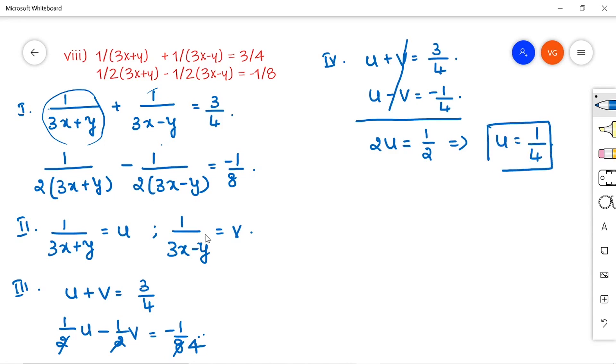Once you get the value of u, substitute it back in any of the equations and get the value of v also. So, u plus v is equal to 3 by 4. Substitute u. v is equal to 3 by 4 minus 1 by 4. That is nothing but 1 by 2. So, v is equal to 1 by 2 and u is equal to 1 by 4.